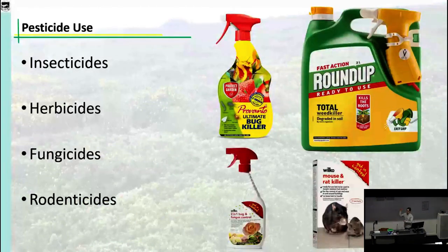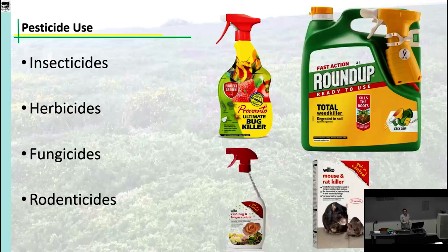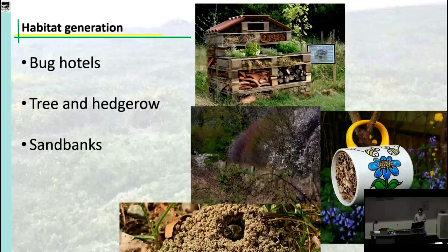Number one: stop using any pesticides. You have no reason to use pesticides anywhere. Step two: tell your parents to stop using pesticides back home. Step three: get them to tell their neighbours to stop using pesticides. There's no legitimate use for shop-bought pesticides in people's homes and gardens anywhere — mostly because this stuff will kill you, but also there's no benefit to it. It's a huge waste of money.